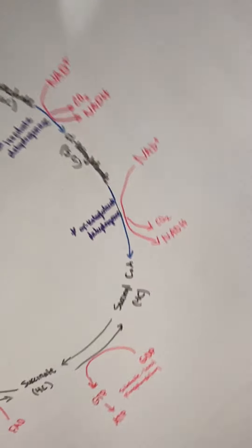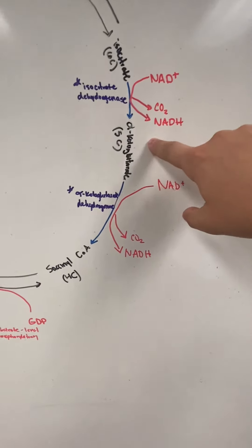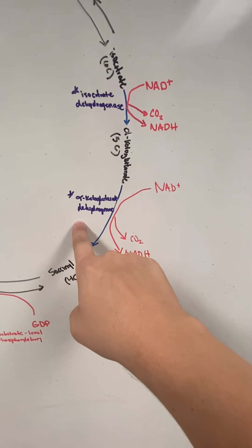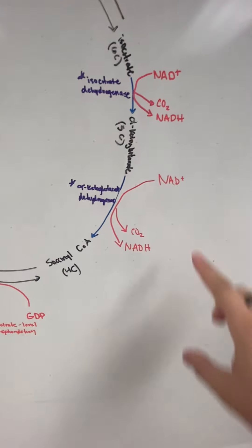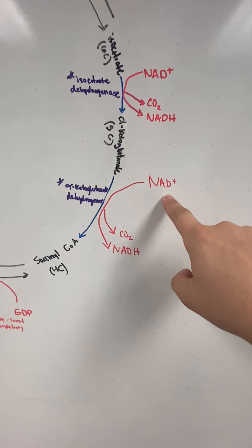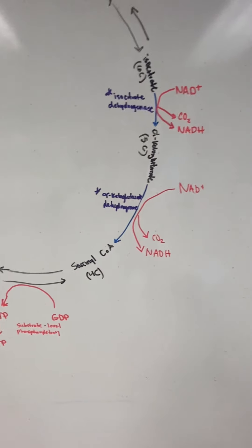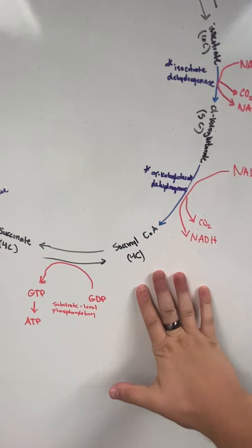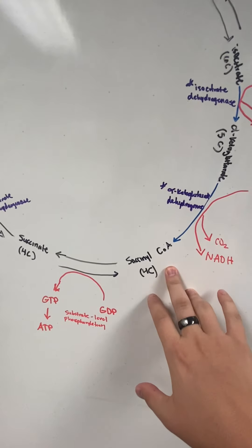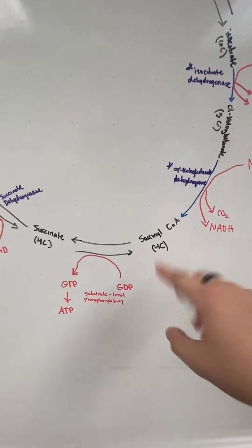We have alpha-ketoglutarate. Sorry, I wrote sideways. From there, we're going to have alpha-ketoglutarate dehydrogenase, which is irreversible. You see the blue line. We're going to do the same thing we did before, NAD+. We're going to release CO2 and NADH. From here, we're left with succinyl-CoA, which is a four-carbon unit. So we've gone from six to four in just two steps.